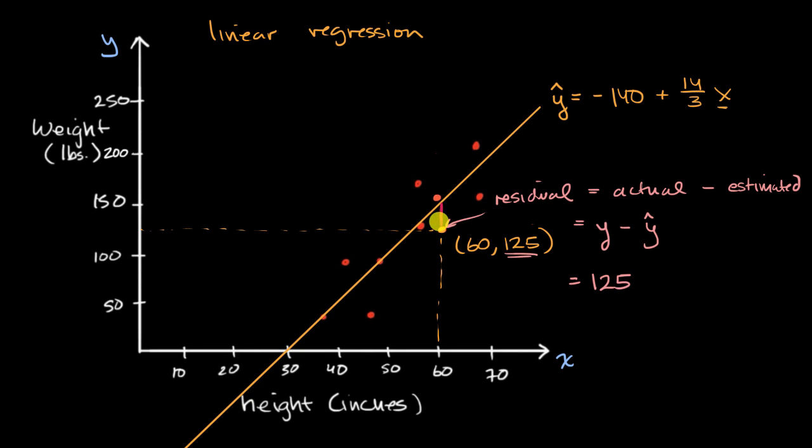Remember, we're calculating the residual for a point. So it's the actual y there minus what would be the estimated y there for that x value. Well, we could just go to this equation and say, what would y hat be when x is equal to 60? Well, it's going to be equal to, let's see, we have negative 140 plus 14 over 3 times 60.